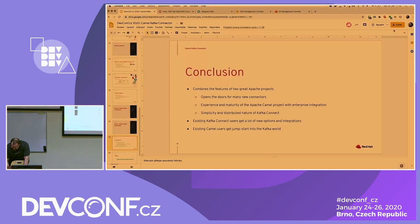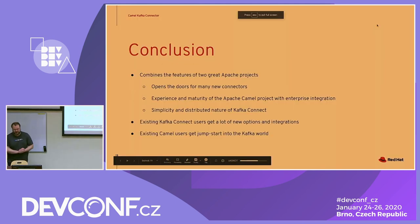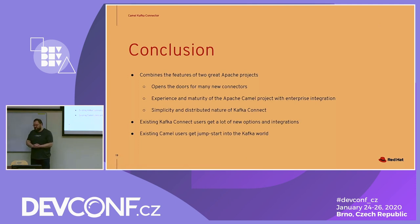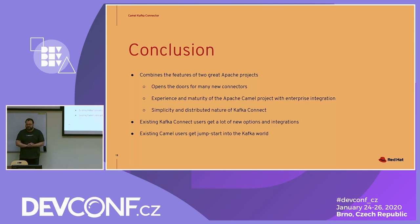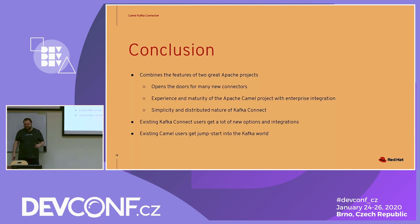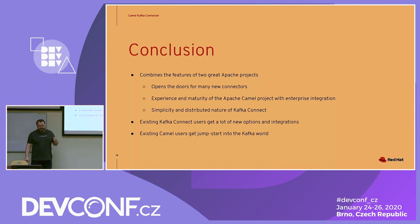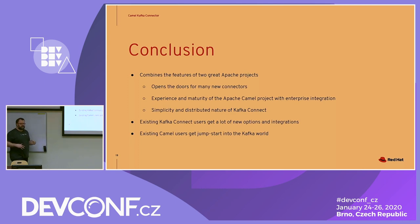So, back to the slides. I hope you liked what you saw, because we are quite happy and excited about this project. It combines the features of two very great Apache Software Foundation projects. As someone on the Kafka side, it's amazing because it opens the doors for many new connectors for Kafka and many new integrations. It also brings the stability, maturity, and experience of the Camel project into the connector world.